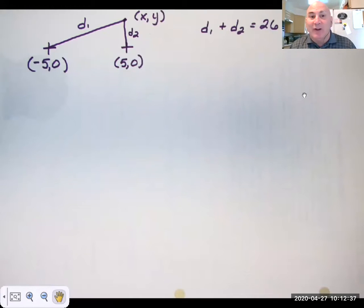We should be able to determine that equation by looking. We know that 2a is going to be 26, so a is 13. We can tell that the major axis is horizontal, so it's going to be x squared over 169 plus y squared over something equals 1.